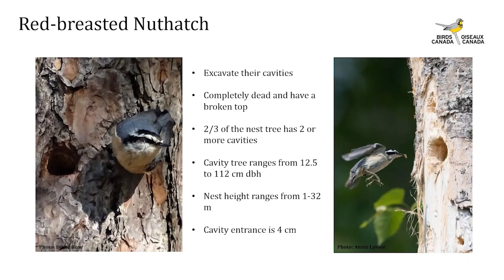Unlike the white-breasted nuthatch, the red-breasted nuthatch excavates its own cavities. Nest trees are more than likely completely dead or have a broken top; they are less likely to excavate cavities in dead parts of live trees. Trees with multiple cavities are a good indicator — two-thirds of their nesting trees have two or more cavities. The tree diameter ranges from 12.5 to 112 cm DBH, nest height from 1 to 32 meters above ground, and the cavity entrance is about 4 cm — very small.